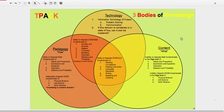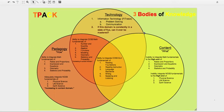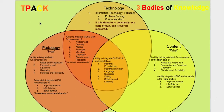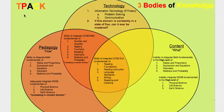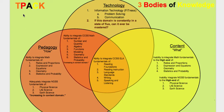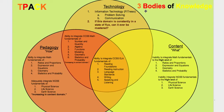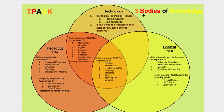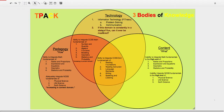Hello there. I wanted to give you a much clearer view as to what you'll be looking at when you look at the TPAC triple Venn diagram that I've created. T being technology, P being pedagogy, A being and, C being content, K being knowledge. So you have the three bodies of knowledge that I've constructed in this triple Venn diagram.